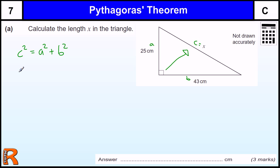So if we put the values in, X squared equals A, which is 25 squared, plus B, which is 43 squared.